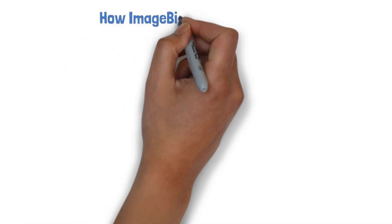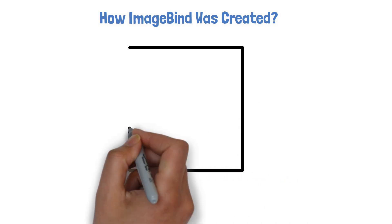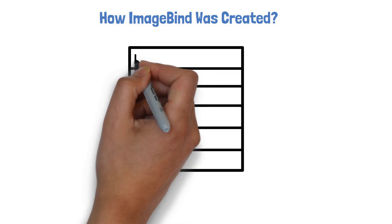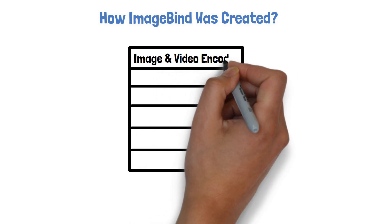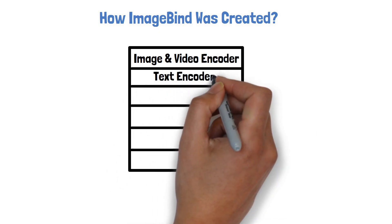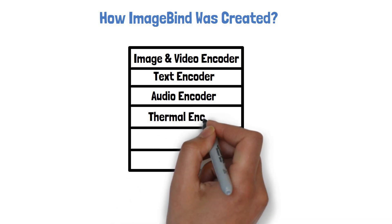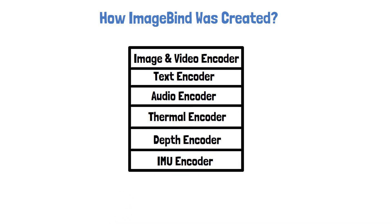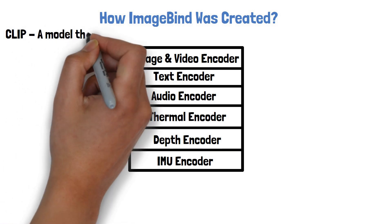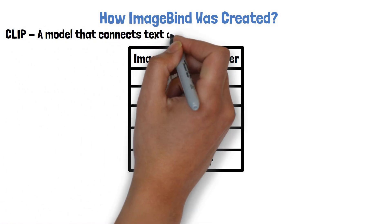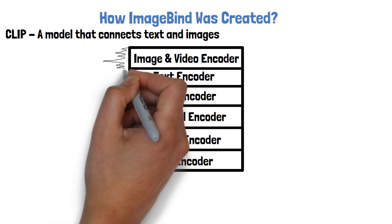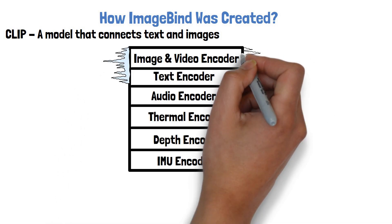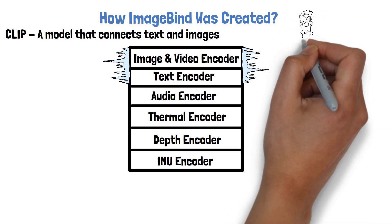Let's now talk about how Meta AI were able to create ImageBind. The ImageBind model can be thought of as a model with 6 channels — each channel is an encoder for a different type of data. They use the same encoder for image and video, and a different encoder for each of the other types. The image and text encoders are taken as-is from CLIP, which is a model by OpenAI that connects text and images, and these encoders are kept frozen during training, so they do not change at all. So ImageBind relies heavily on CLIP.